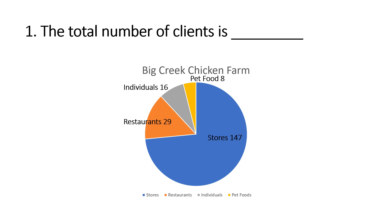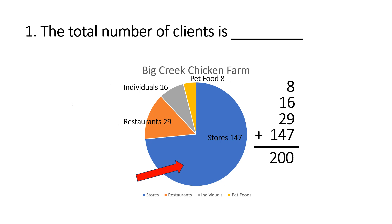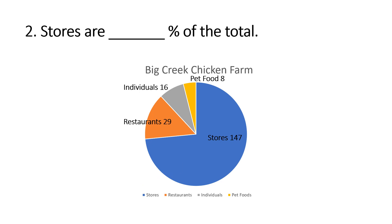We will add: pet foods is 8, individuals is 16, restaurants is 29, and stores are 147, so that is a total of 200 clients. Question number two: stores are blank percent of the total.